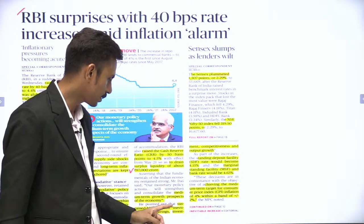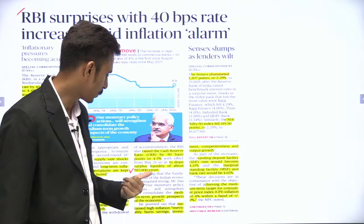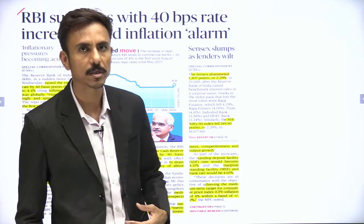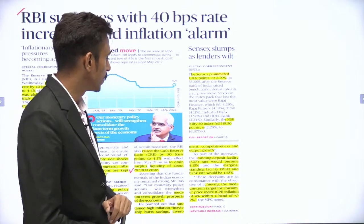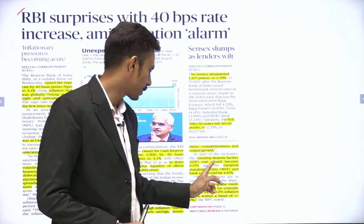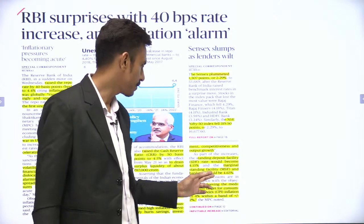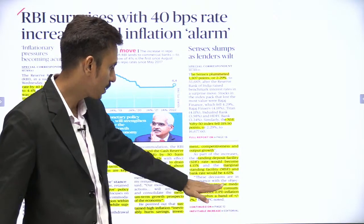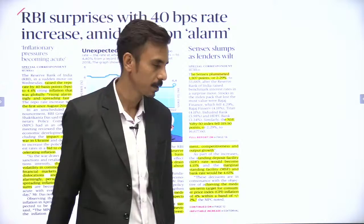RBI Governor Shaktikanta Das clearly stated that this will strengthen and consolidate the medium-term growth prospects of the economy. He also pointed out that sustained high inflation inevitably hurts savings, investment, competitiveness, and output growth. The SDF — Standing Deposit Facility — will now become 4.15%, while the MSF and bank rate have also been increased to 4.65%. RBI is confident they would achieve the medium-term CPI inflation target of 4% ± 2%.